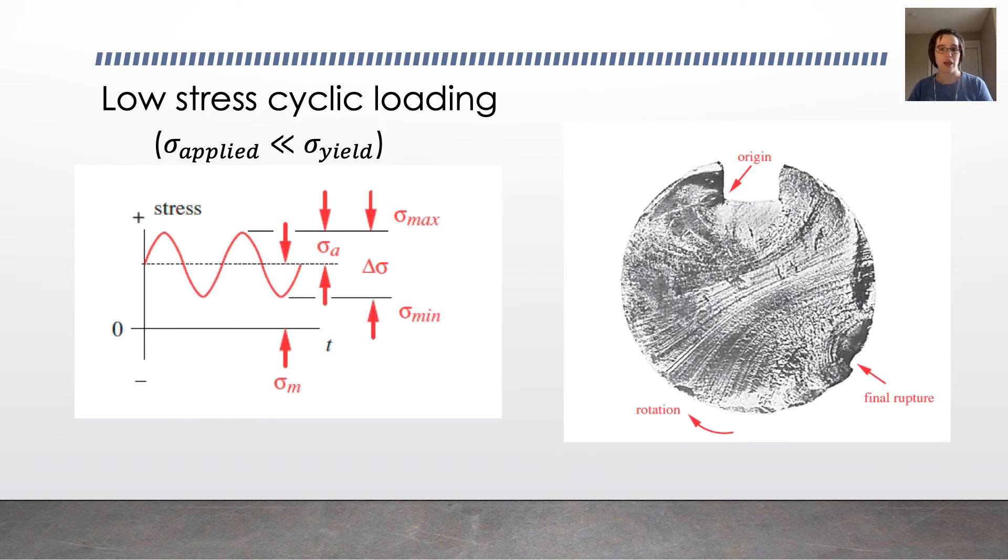For example, this shaft started with a small crack in the keyway of this shaft. This is a cross-section of a shaft, and at the top there's a keyway. Over many cycles, that crack propagated until finally there was a catastrophic rupture at the end.